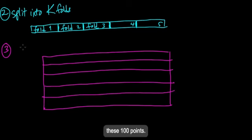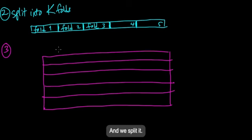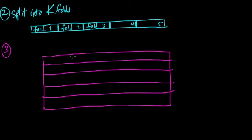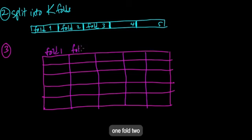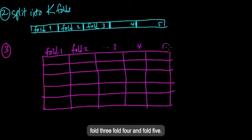So we've split it into these K different folds, and now comes the validation. So three, we're going to do a series of rounds.